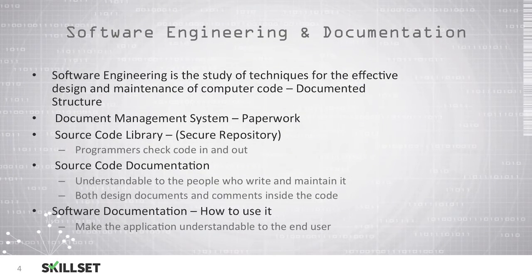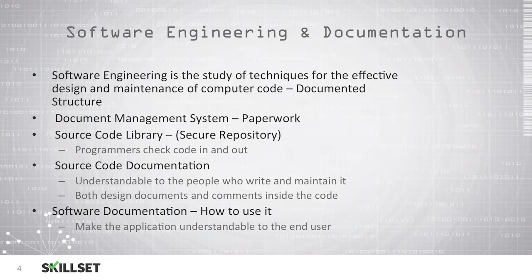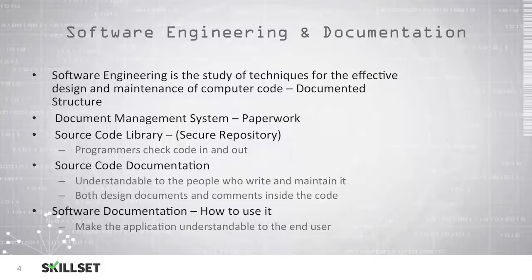Software engineering involves techniques for effectively designing and maintaining computer code and making sure that the structure is documented. You can use a document management system to maintain paperwork, but you use a secure code library, which is a secure repository for maintaining computer code. Your programmers will check in and check out the code as they need to work on it. It is important to make sure that you have source code documentation so that the people who write and maintain the code can understand what is going on with the software.